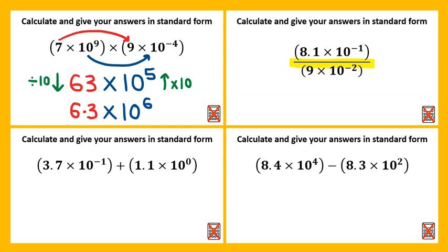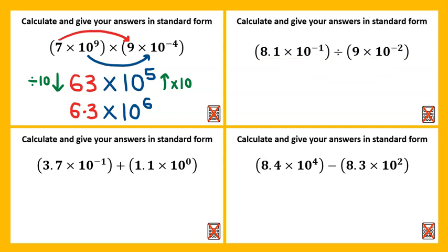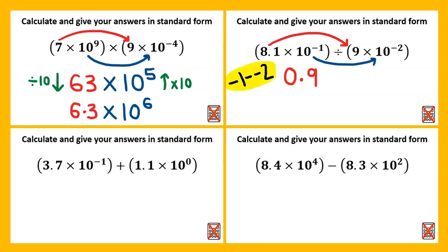A fraction represents the same as division, so if easier we can change it to this format. Starting off with eight point one divided by nine, which is zero point nine. And then we have ten to the power of negative one divided by ten to the power of negative two. This would be negative one, and because we're dividing we'll need to subtract negative two. Negative one subtract negative two has the same impact as doing negative one plus two. So the answer would be zero point nine times ten to the power of one.